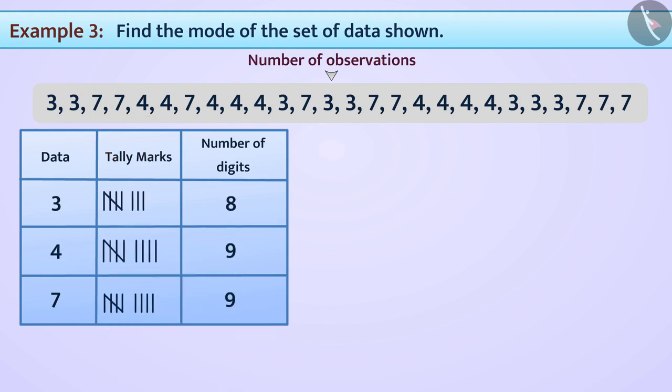Now, pause the video and take a moment to think. Looking at the table, we can easily infer that both 7 and 4 have come at most 9 times. Hence, 7 and 4 are the modes for the provided data set.